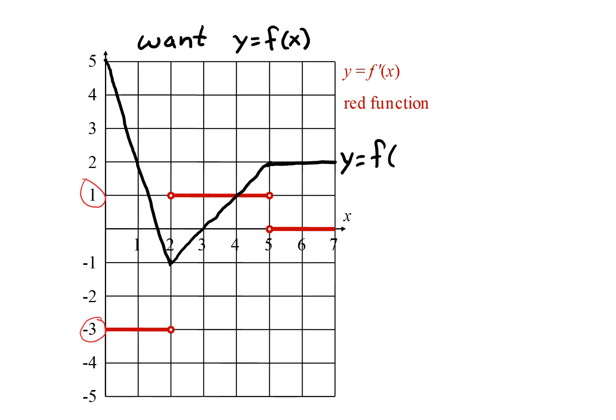That works perfectly well as a graph of f, but it is not the only graph we could have drawn. Remember that nothing in this problem told us where to start. We could start somewhere else. Once we pick the starting point, though, the shape of the graph is dictated by the derivative. We have to start out with a slope of negative 3, keep that slope until x equals 2, and then change to a slope of positive 1. As before, when we reach x equals 5, the derivative becomes 0, so the function is horizontal.